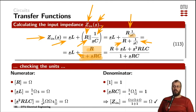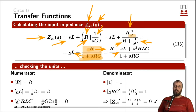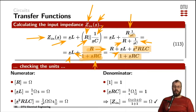The final step to derive the input impedance is multiplying (1 + SRC) with SL, which leaves R from the parallel combination, plus SL from multiplying 1 by SL, plus S²·R·L·C from multiplying SRC by SL. The denominator stays unchanged as the common denominator: (1 + SRC).